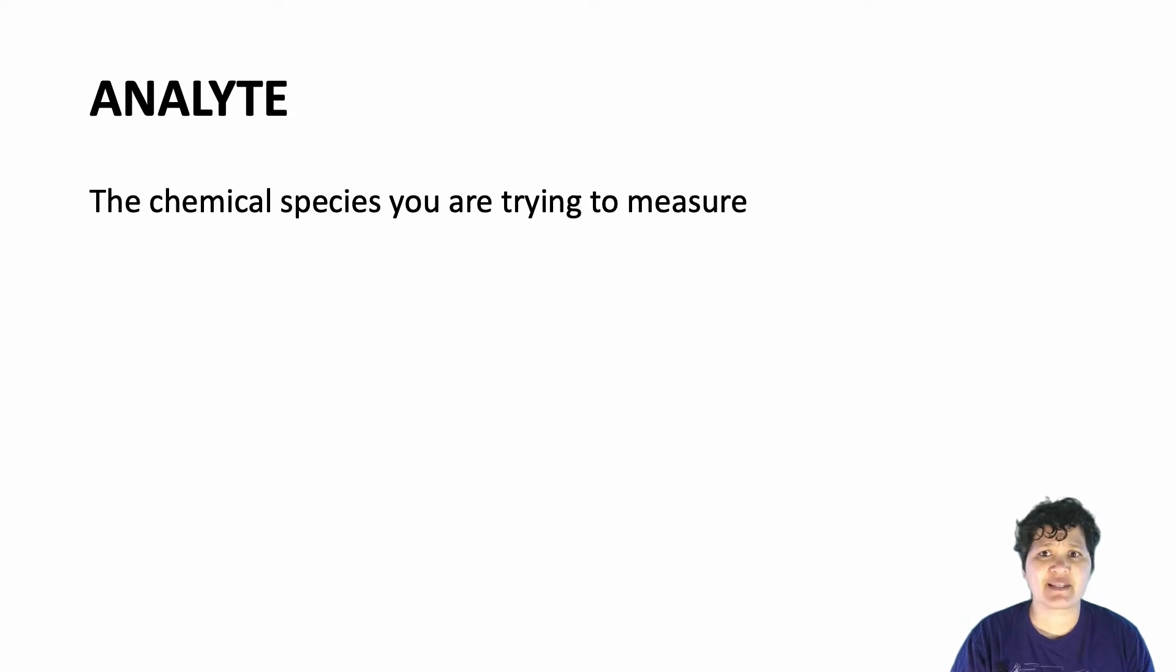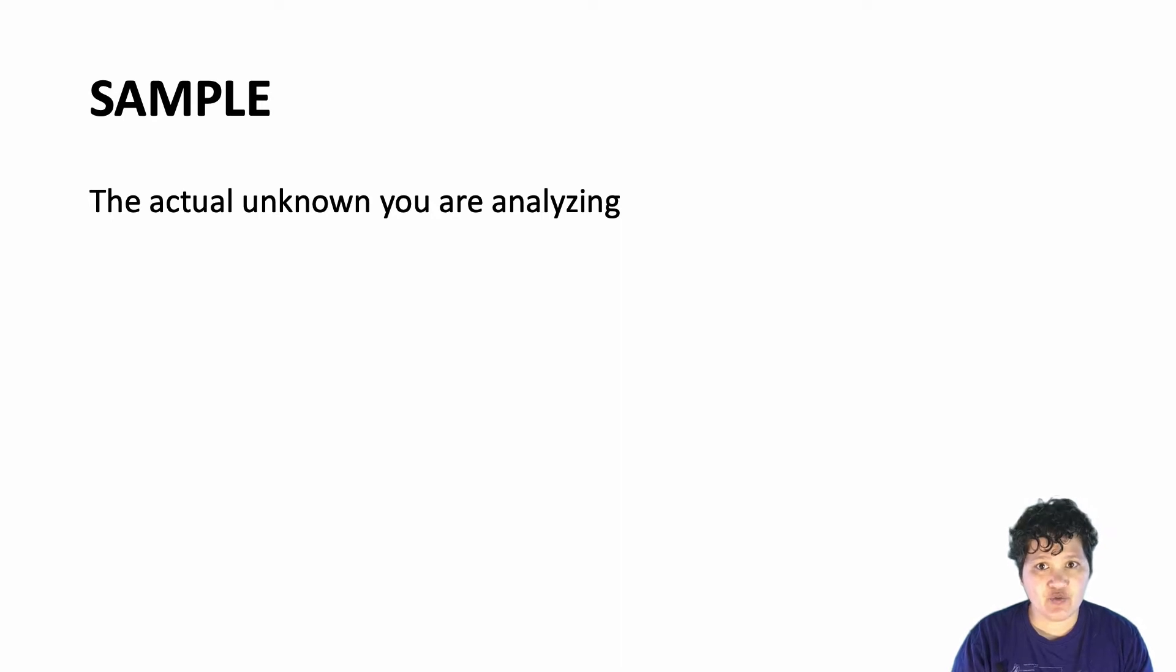An analyte is the specific chemical species that you are trying to measure. Some analytical methods allow you to measure multiple analytes at once, but you can't really choose a method until you know specifically what analyte or analytes you're looking for. A sample is the actual thing that you run through your instrument. If you're lucky, your sample will contain your analyte, but it will also probably contain other things. Your solvent, for one. So if you're trying to measure lead in tap water, your analyte is lead. Your sample may or may not have any lead in it, but it will definitely have water. It might also have dissolved species like chlorine, sodium, and calcium.